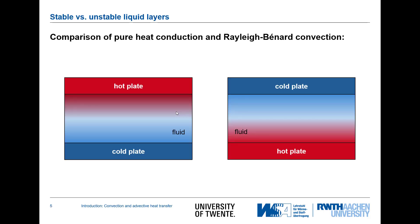Now I would like to compare two different cases: one stable and one unstable. In the first case, we have a hot wall on the top and a cold wall on the bottom, with a fluid — liquid or gas — between them. In the other case, the positions of the plates are switched. The question is under which conditions we have better heat transfer from the hot side to the cold side.